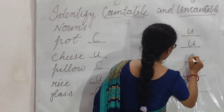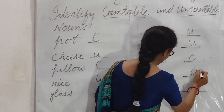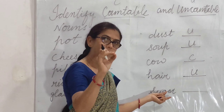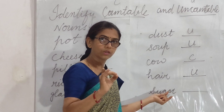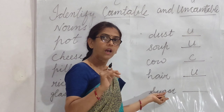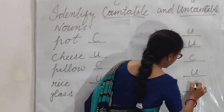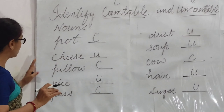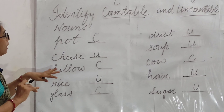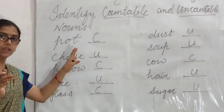Cow — cow ka plural banaate hain na: cows. So cow is countable, write C. Hair — aapne baal ko gin sakte hain? No, not possible. So hair is uncountable, write U. Sugar — sugar is also an uncountable noun. Sugar ke saath hum expressions use karte hain: pinch of sugar, spoon of sugar. We can use expressions with this noun. All these are uncountable nouns but we cannot count them, so write U. So this is all about countable and uncountable nouns. I hope you all can identify countable and uncountable nouns very easily.